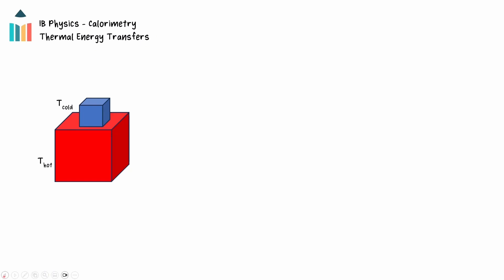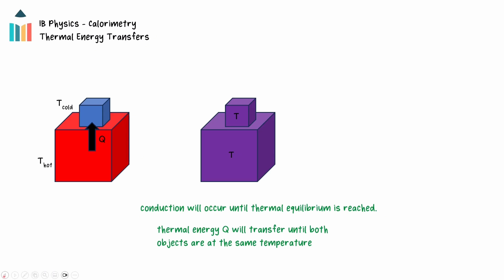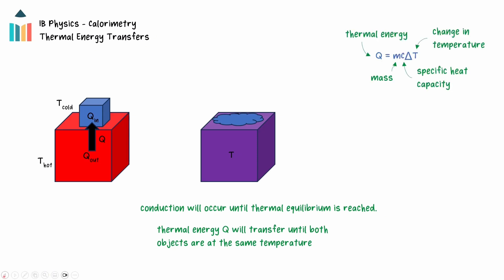When two objects with different temperatures are in contact with each other, thermal energy will transfer from the hot object to the cold object. Thermal energy will continue to transfer until both objects reach the same temperature or thermal equilibrium. This may involve a change of phase for an object before the final equilibrium temperature is reached. The object at the higher temperature will be losing energy, causing its temperature to decrease or its phase to change, and the object at the lower temperature will be gaining energy. According to the conservation of energy, the energy lost by the higher temperature object must be equal to the energy gained by the object at the lower temperature.